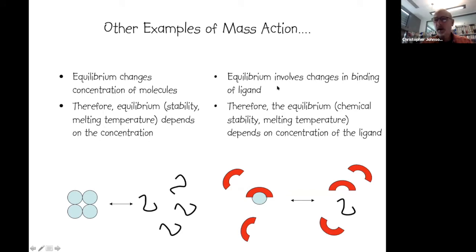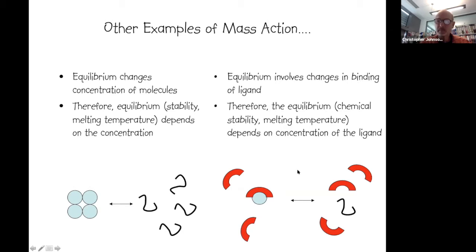Another example of mass action: for an oligomeric system such as a tetramer, unfolding generates four unfolded monomers, so the melting temperature of the tetramer depends on its concentration. Similarly, ligands that bind to proteins tend to increase their Tm — this comes simply from a mass action effect, where the equilibrium between unbound and bound states depends on the concentration of the ligand.